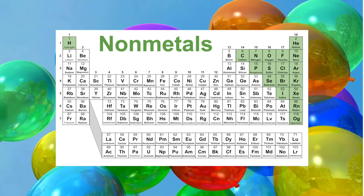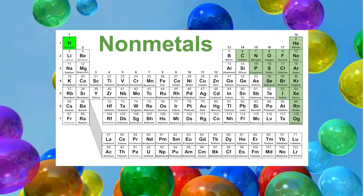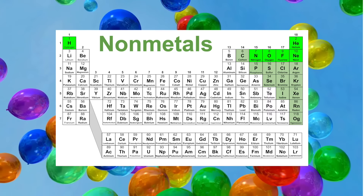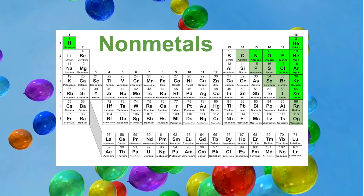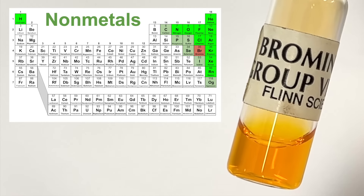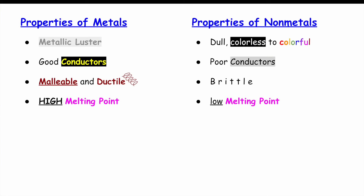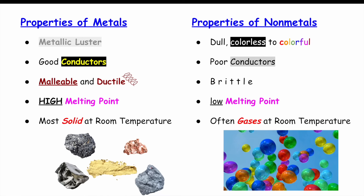Now if we take a look at the non-metals, many of them are actually gases at room temperature, such as hydrogen, helium, nitrogen, oxygen, fluorine, neon, chlorine, argon, krypton, xenon, and radon. One of them is a liquid — bromine — and then the remaining are solids. So for metals, they're almost all solids at room temperature, whereas for non-metals it's a little different, but oftentimes they're gases at room temperature.